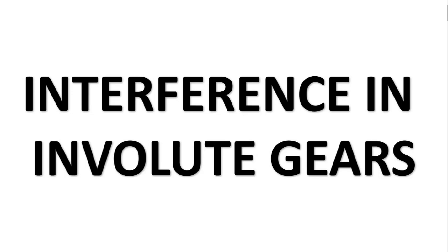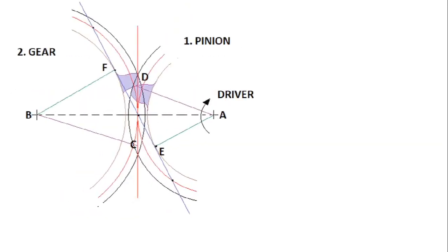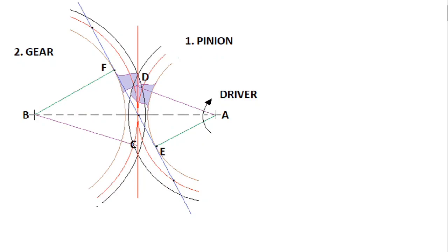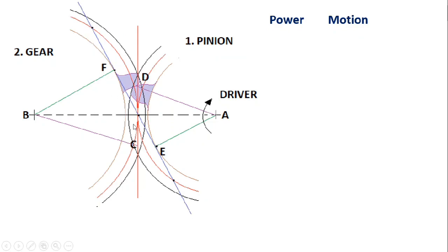Here we have the diagram of a pinion and gear meshed together. The pinion is denoted by one with center A, and the gear is denoted with center B and is number two. Both gears mesh together and transmit power as well as motion through the line of action EF, which is blue in color. This line of action is tangent to the base circle of the gear at point F, tangent to the base circle of the pinion at point E, and passes through the pitch point P — the intersection of the pitch circles of the pinion and gear.